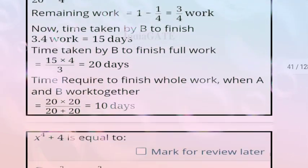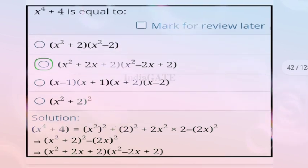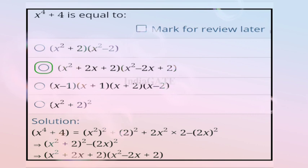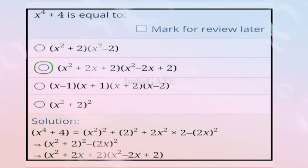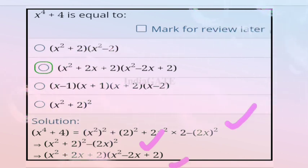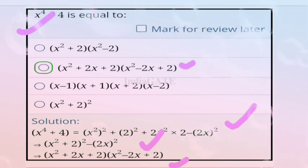Next question: x⁴ + 4 equals? Correct answer is option B: (x² + 2x + 2)(x² - 2x + 2). We know x⁴ + 4 = (x² + 2)² - (2x)² which factors as (x² + 2x + 2)(x² - 2x + 2). We can also verify through the given options. Correct answer is option B.